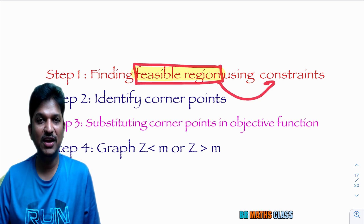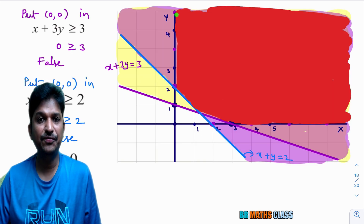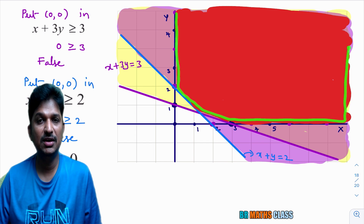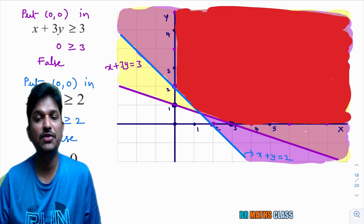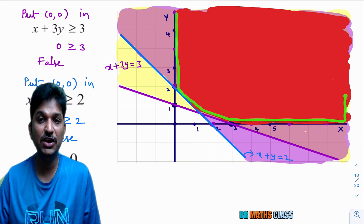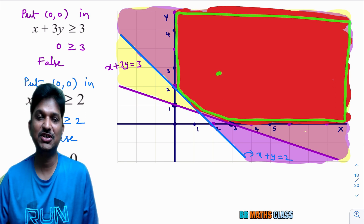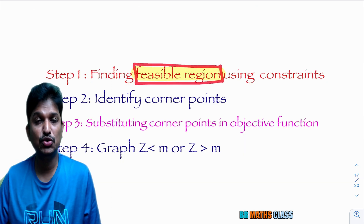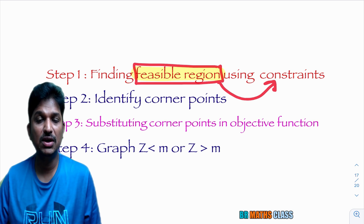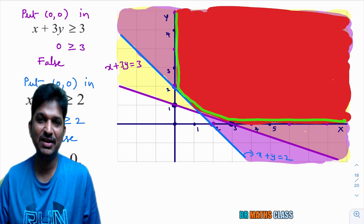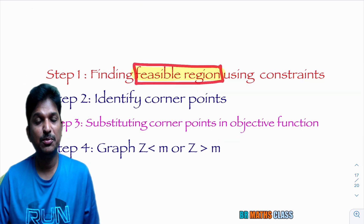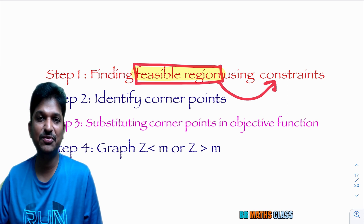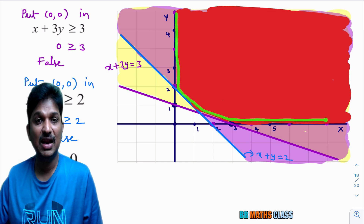Hello everyone. I am Balaji Rao. Welcome to BRMAX class. This is the 5th class in Linear Programming problems. Till now we have done problems which have a bounded feasible region. In this video, we are going to do the first problem where the given linear programming problem has an unbounded feasible region. Let's begin the class.